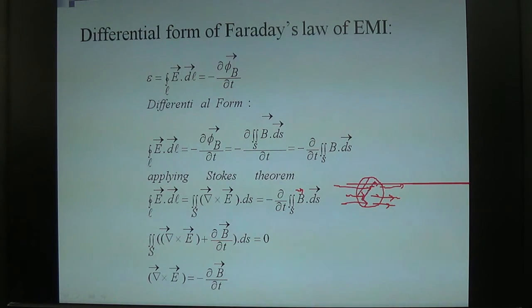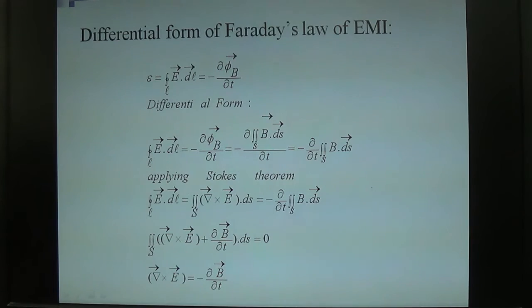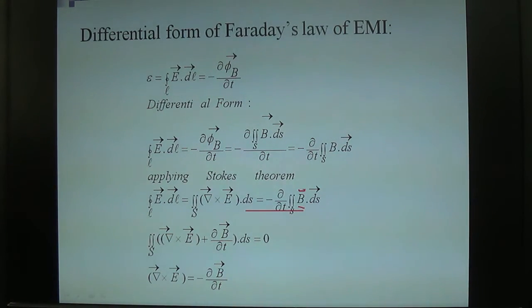The area of the coil is fixed — it is not variable. So comparing both sides, since both are open surface integrals, we can equate the integrands. The result is that del cross E plus del B upon del t equals zero, which gives us the differential form of Faraday's law: del cross E equals minus del B upon del t.